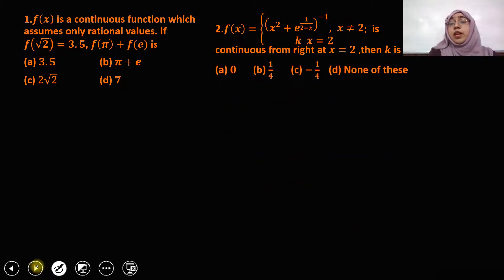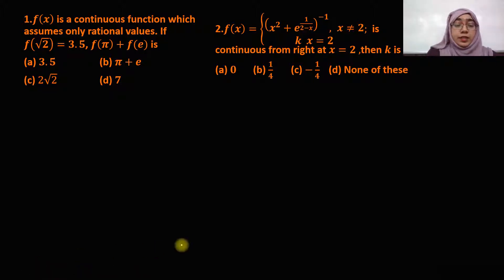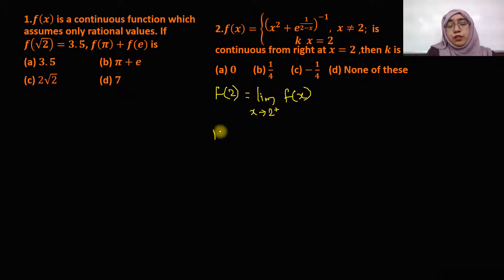f of x is equal to x square plus 1 upon e raised to 2 minus x, the whole raised to minus 1, when x is not equal to 2, and it is equal to k when x is equal to 2. It is continuous from the right. What is the value of k? The value of f of 2 is k. Since it is continuous, I can say that f of 2 equals limit extending to 2 plus of f of x.